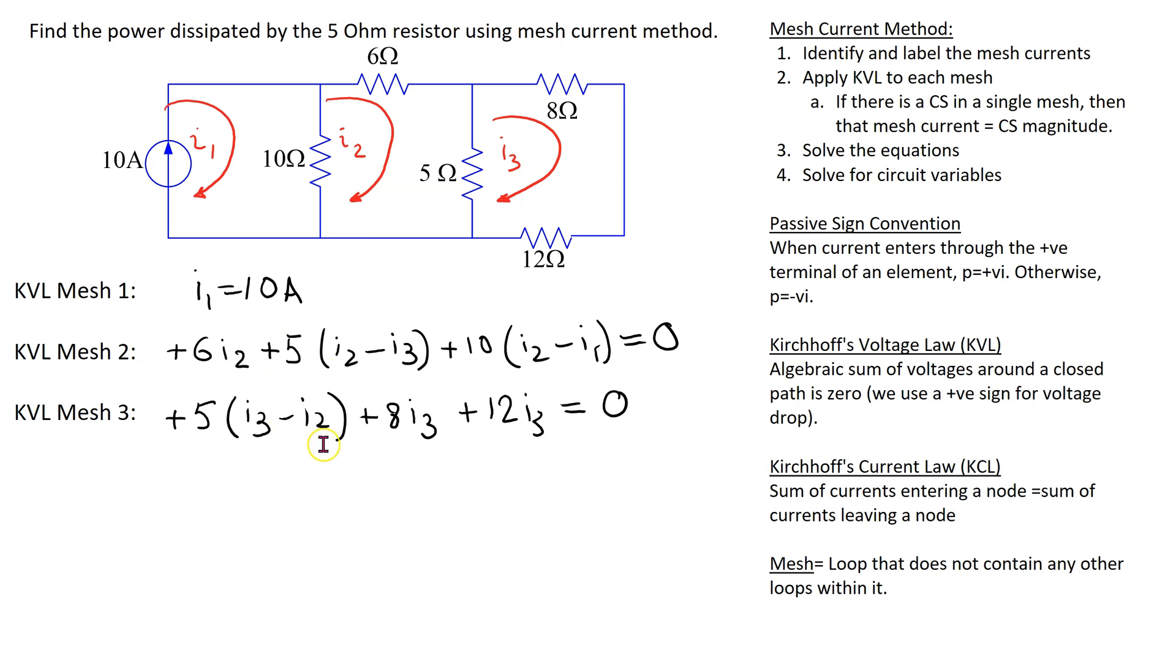Here we have two equations and two unknowns. And we can solve these equations to find I2 and I3.